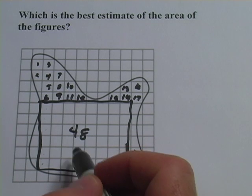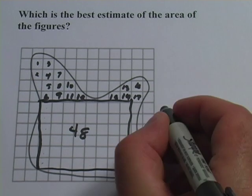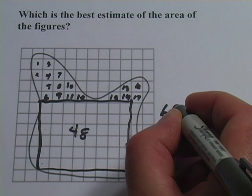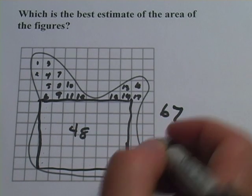So I've got 19 here plus 48. So I'm up to 67 now. Okay.